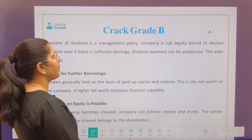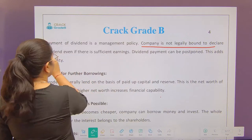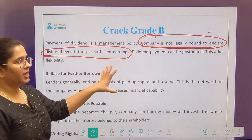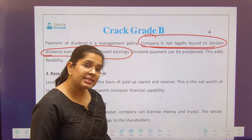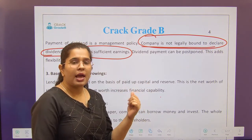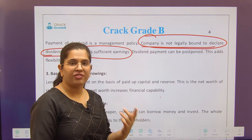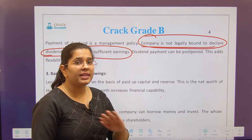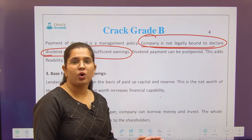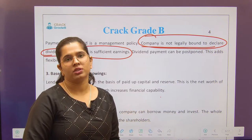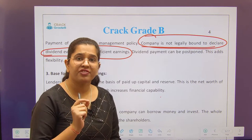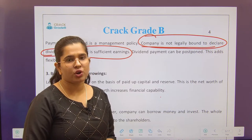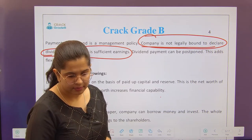Payment of dividend is a management policy. The company is not legally bound to declare dividend to equity shareholders even if there are sufficient earnings. However, it must declare dividend to preference shareholders and must pay interest to debenture holders in any scenario. You have to pay interest to debenture holders whether the company is incurring profit or loss — this is known as a fixed charge. Equity does not have this fixed charge obligation.